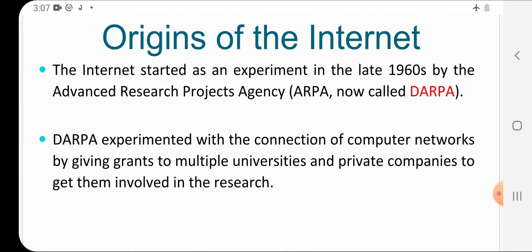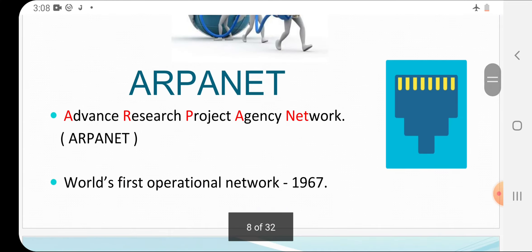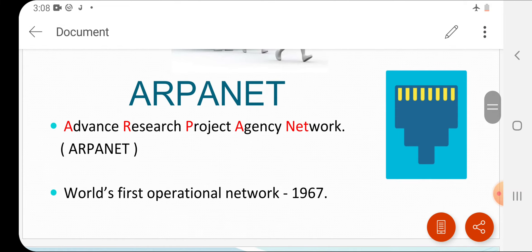The idea was that each host computer would be attached to a specialized computer called an Interface Message Processor, or IMP. The IMPs would then be connected to each other. The University of California at Los Angeles, the University of California at Santa Barbara, Stanford Research Institute, and the University of Utah were connected via IMPs to form the network. This was ARPANET — the Advanced Research Projects Agency Network — the first operational network, connecting different universities in 1967.